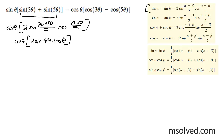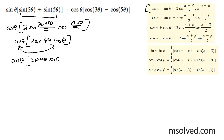After this, we're going to swap out the sine and cosine terms so we can manipulate this the way we want. We get cosine θ times 2 sine 4θ times sine θ.